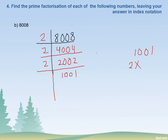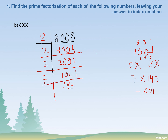1001 is not divisible by 2. We try 3 — 1001 is not divisible by 3. 4, 5, and 6 are not prime numbers. We try 7: 7 multiplied by 143 equals 1001, so we write 7 and 143. Now again if we try with 7, 7 cannot divide 143. And 3 cannot divide 143 either. We will try something else.